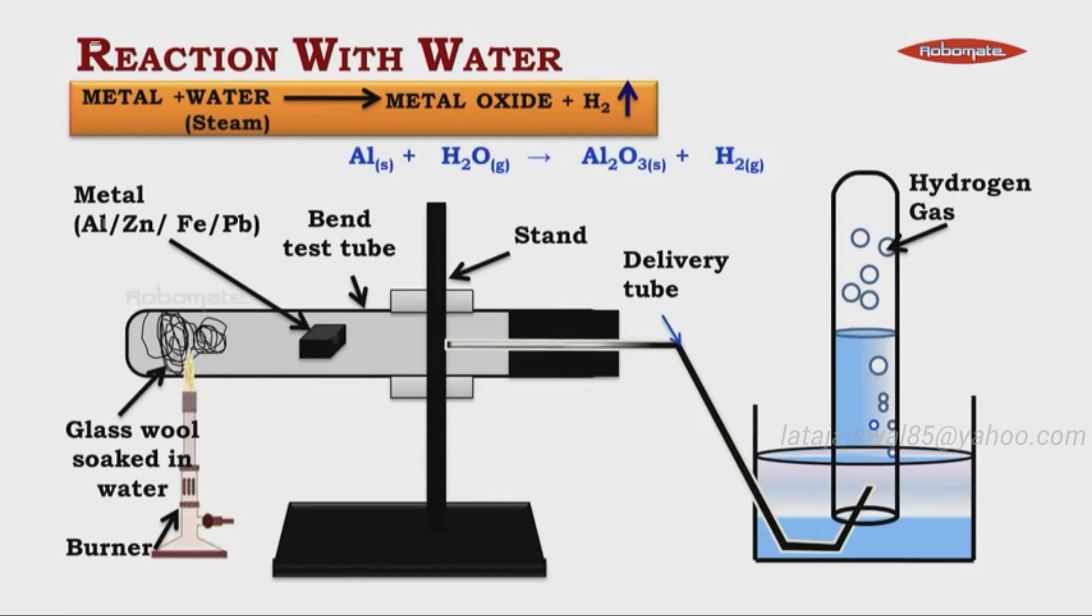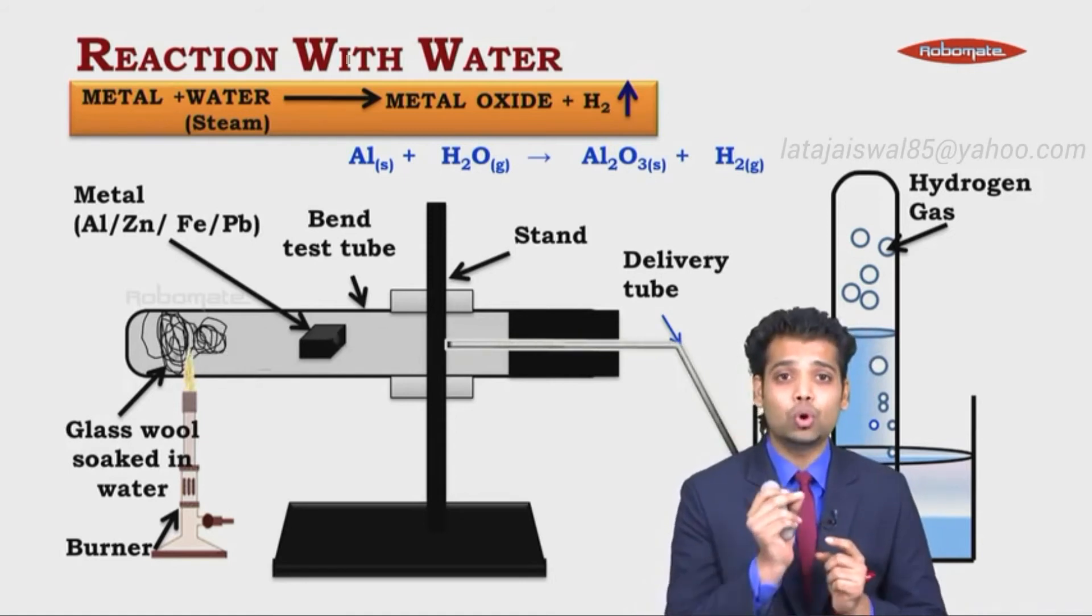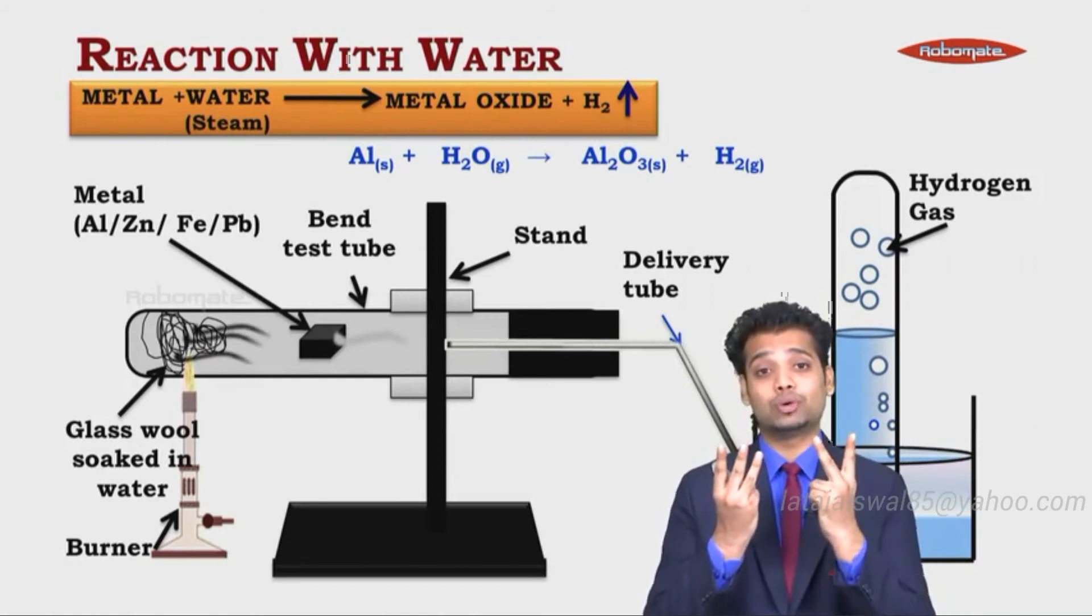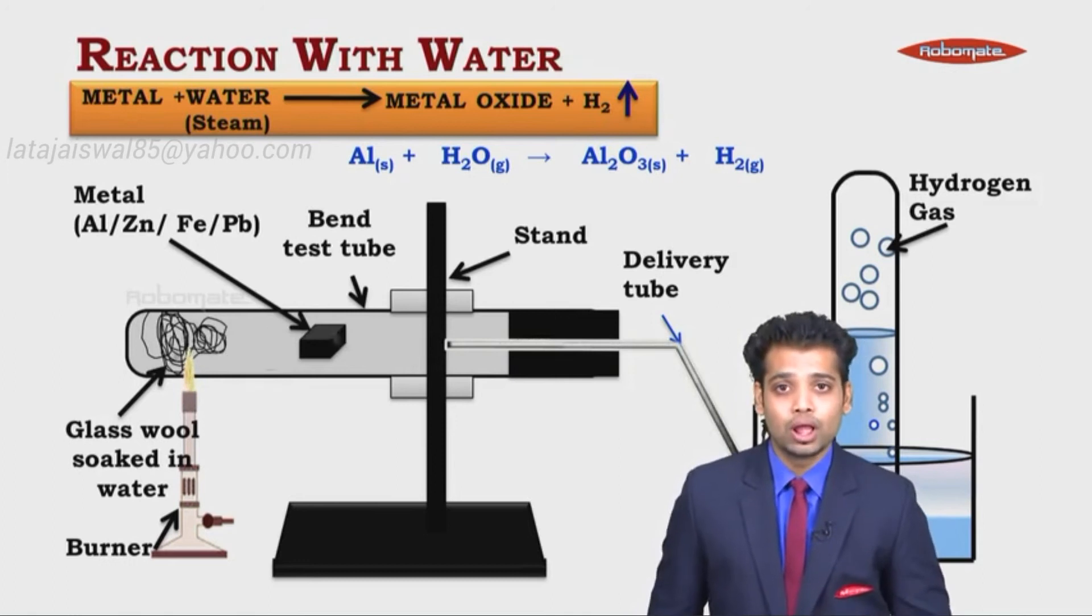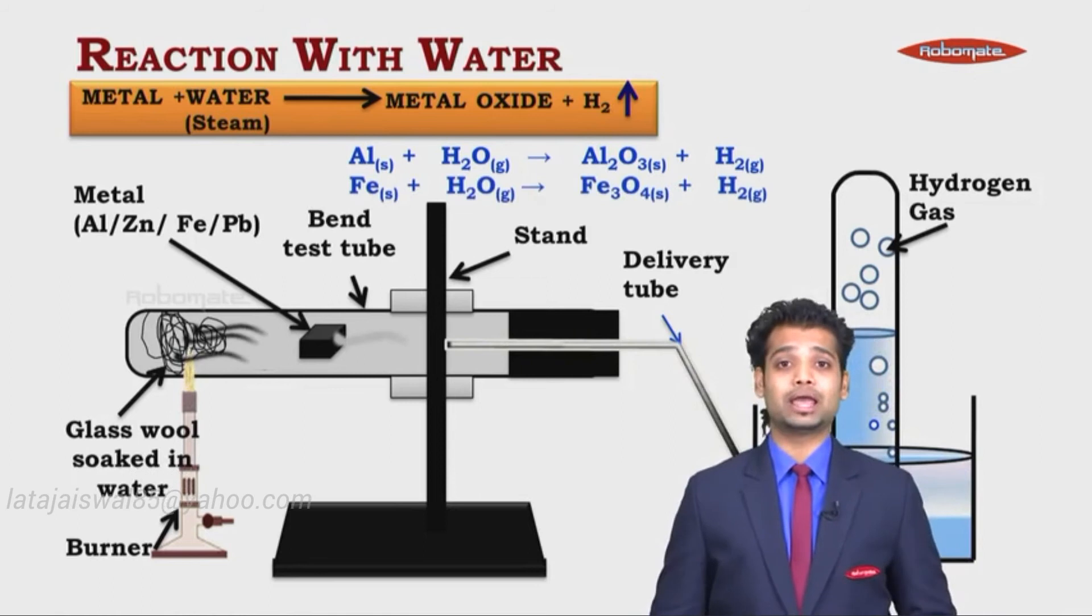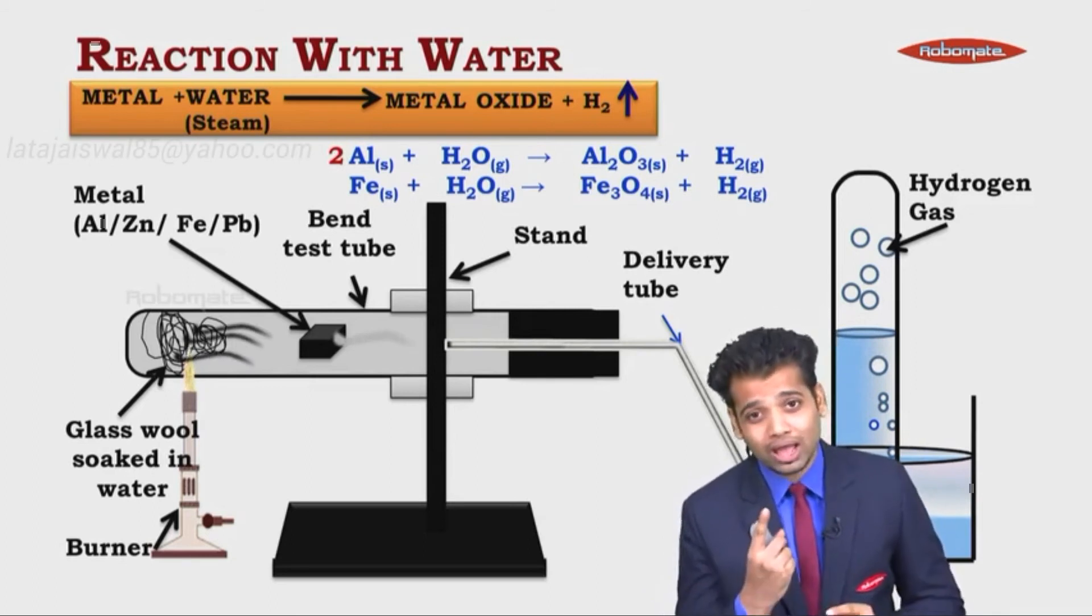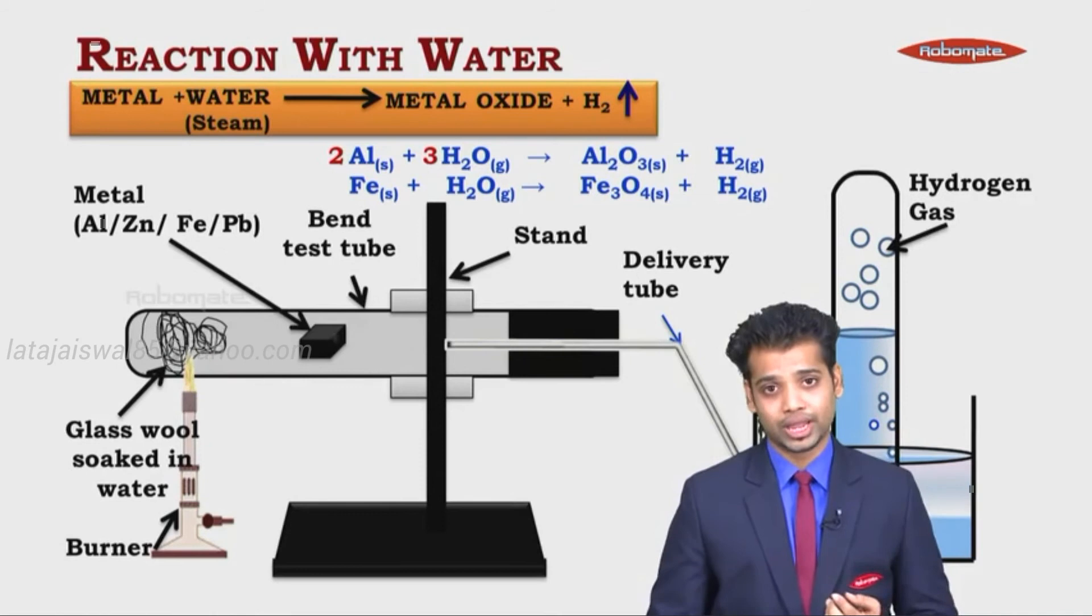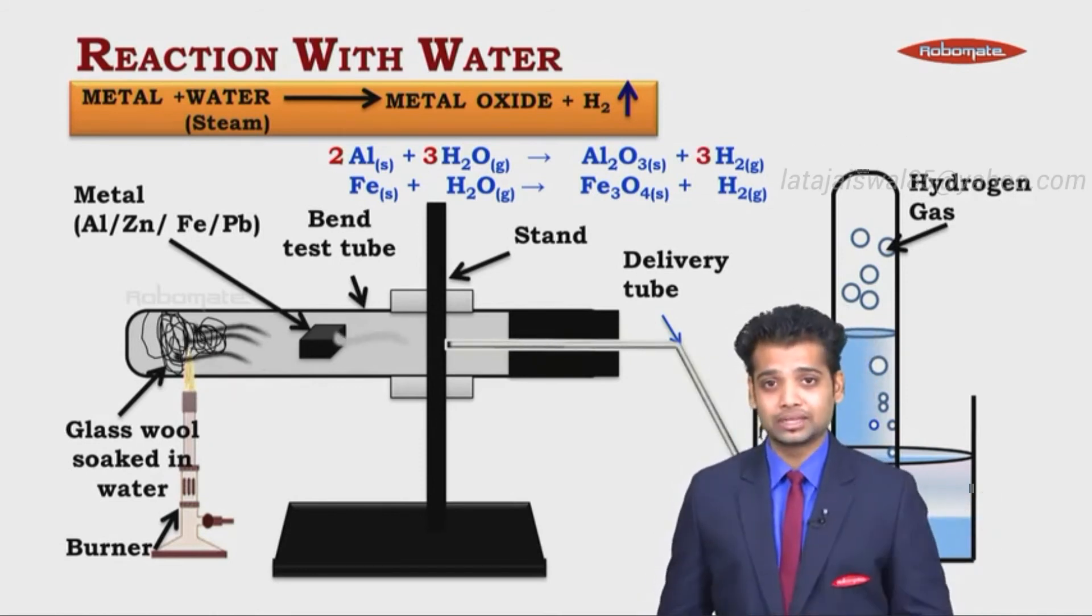Let's see the reaction Al plus H2O. Now Al is reacting with oxygen to form what? Al2O3 plus H2. Aluminum valence is 3, oxygen valence is 2. Al2O3 plus H2. Let's balance the reaction. Al is 1 on the left hand side, 2 on the right hand side. Multiply it by 2. H2 is 2 and 2 on the right hand side. O is just 1, O is 3 on the right hand side. What do you do to 1? Multiply it by 3. Hydrogen becomes 6. It's 2 on the right hand side. Multiply it by 3.